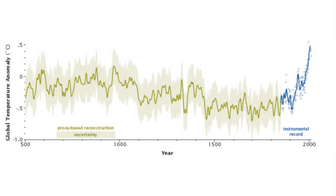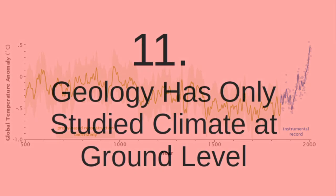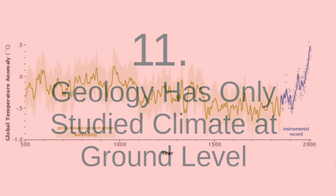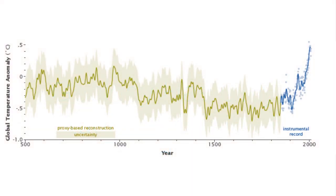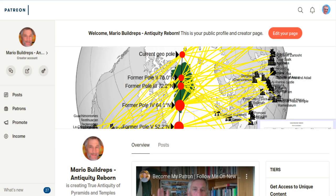So the troposphere plus the stratosphere are in equilibrium. We suspect that the atmosphere has always been in equilibrium. Geology studies temperature change by taking rock samples — they are only studying changes in the troposphere while neglecting the stratosphere.